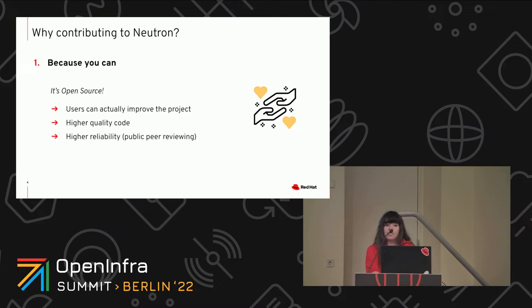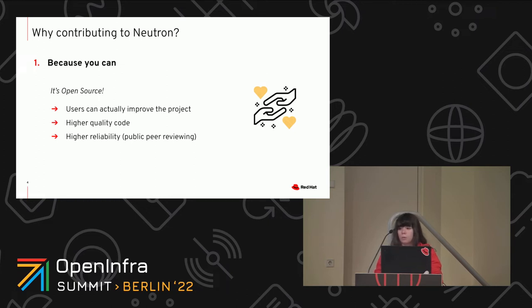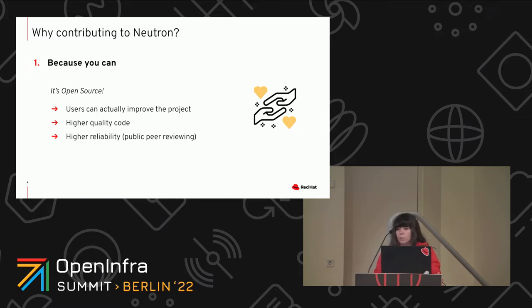So why is it a nice thing to contribute to Neutron? The first reason is because you can. It's not with every project that you're able to get interested, find a problem, and just go into the code base and learn why something is failing or how something is working. And if it's a problem, you can even submit a patch for it. I think that allows for higher quality code and higher reliability because there are more people looking at the code than if it were closed source. There's also public peer reviewing — for a commit to get into the code base, several people must review a patch and at least two core reviewers must state that whatever you coded is right to go in.